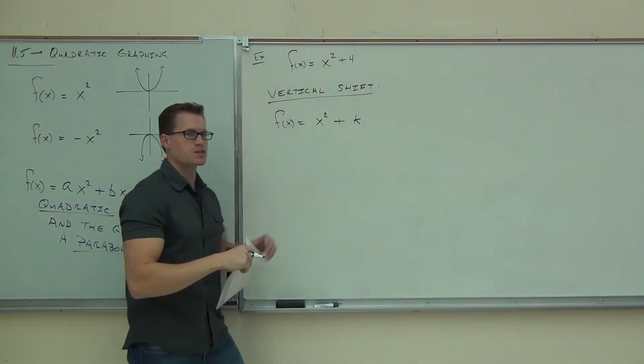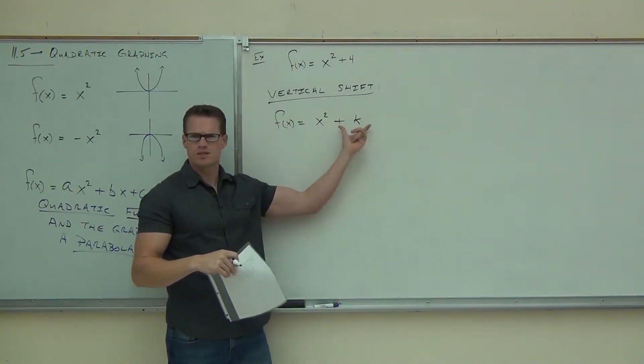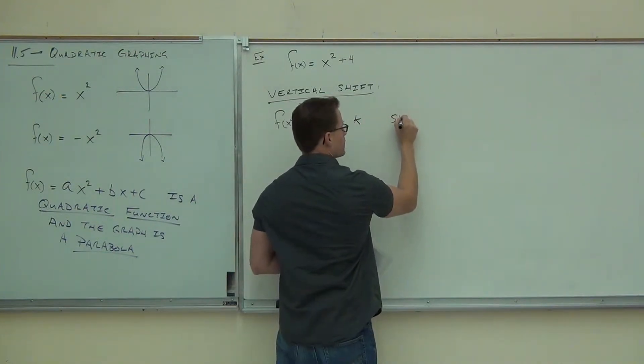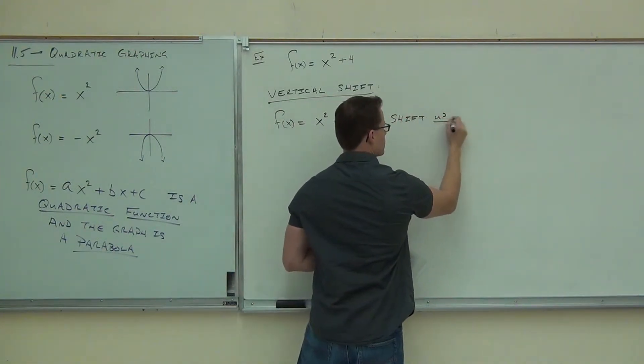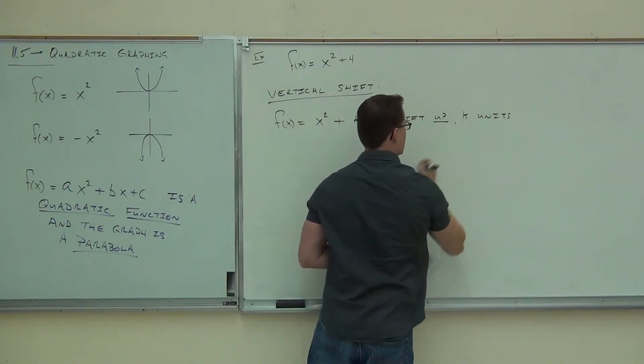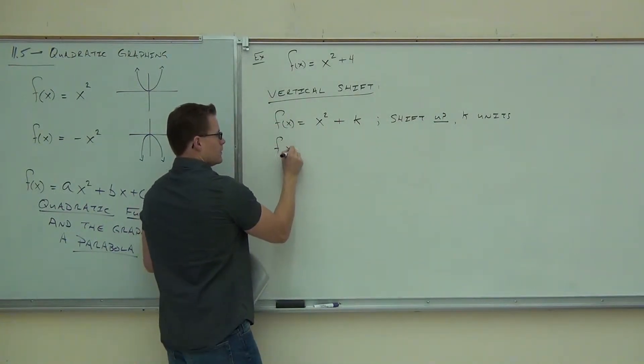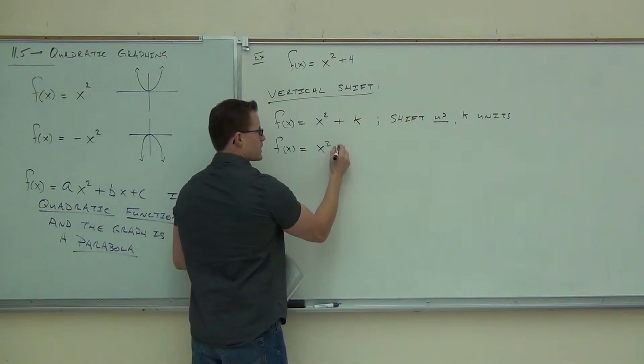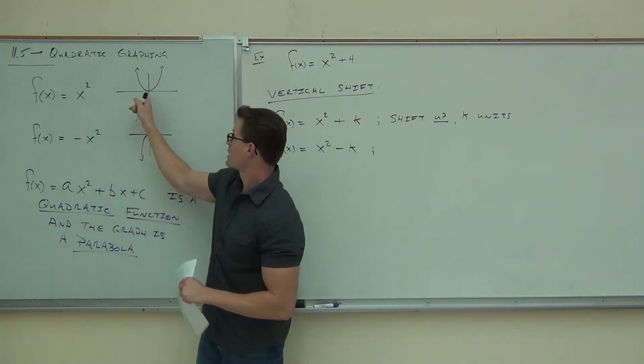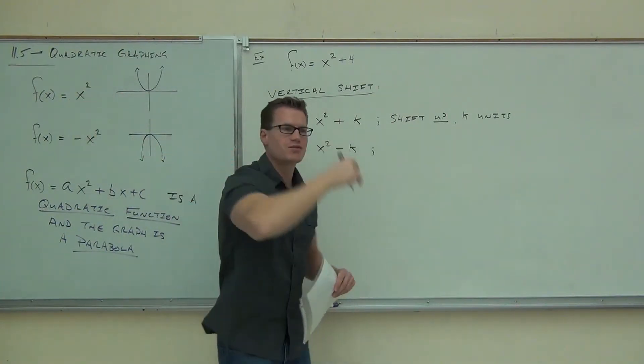If we have x squared plus k, so some parabola plus k, what that's doing is that's shifting it... What was this again? Up or down? This is up k units. This is a shift up k units. Which means that if we have x squared minus k, well, that's just going to be a shift down k units. So we're taking this graph right here, our basic graph shape from chapter 8, the x squared, that's a parabola starting at the origin, and we're just shifting it up or down.